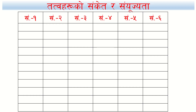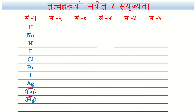We need to talk about the compound and the compound. Elements include: hydrogen, sodium, potassium, fluorine, chlorine, bromine, iodine, silver, copper, mercury, gold (Au).